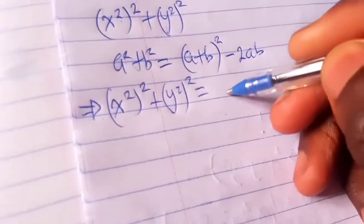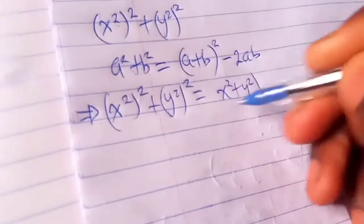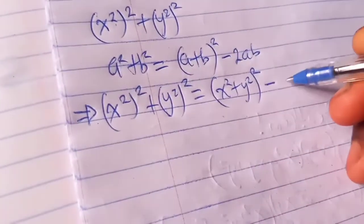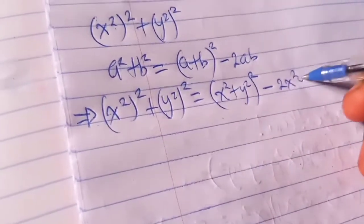Now this is how I'm going to do it: x squared plus y squared, I square that, minus 2x squared y squared.